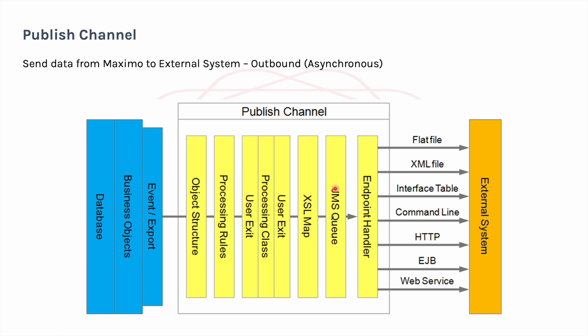One way is you can use classes — you have user exit classes, processing classes, and on the object structure you also have classes. Another way is you can create an automation script; later in our series we will also see automation scripts doing the same job. But if you want to do it using configuration, there is a method provided by IBM called processing rules. You can set processing rules on publish channel for outbound and similarly on enterprise services for inbound. I'll focus on processing rules on publish channel for now, which will show you how you can modify the message you are sending.